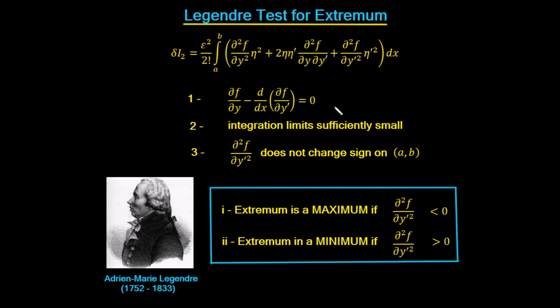So the first one is that obviously the first variation has gone to zero, so that is the Euler-Lagrange equation is satisfied. So we do have an extremum.